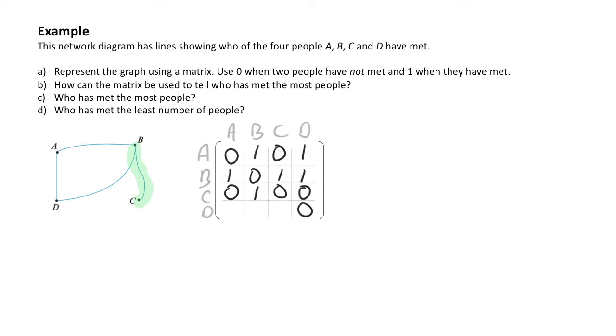Now all that is left is for me to go ahead and complete my row D. Looking at object D, I can see that they're connected with object B and they're also connected with object A, but there's no connection to object C. So D and A are connected, D and B are connected, but D and C are not connected. That gives me my adjacency matrix for the network diagram shown, which completes part A of the question.